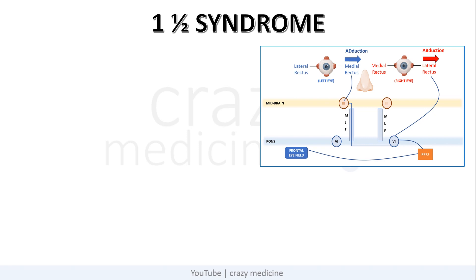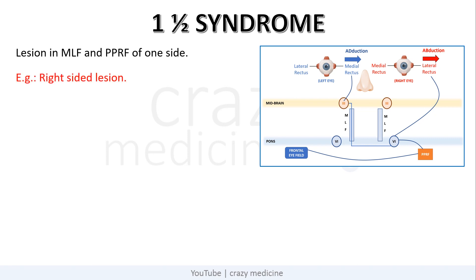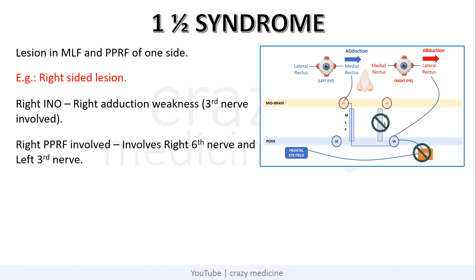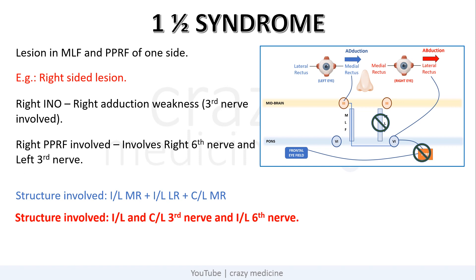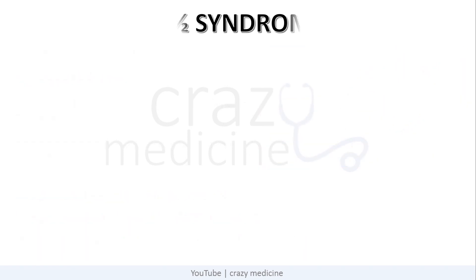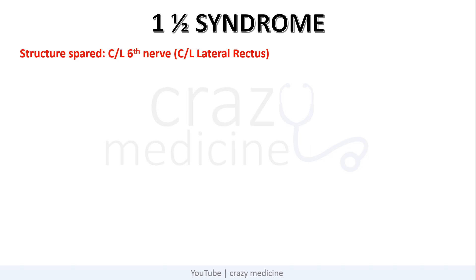Now coming to something called 1.5 syndrome. In 1.5 syndrome, the lesion is in the MLF and PPRF of one side. Taking the example of a right-sided lesion — right-sided MLF and PPRF are non-functional. As the right MLF is involved, there will be right INO, i.e. right adduction weakness due to 3rd nerve palsy. Right PPRF involvement also affects stimulation of right lateral rectus via the 6th nerve and left medial rectus via left MLF and left 3rd nerve nucleus. So the structures involved will be ipsilateral medial rectus, ipsilateral lateral rectus, and contralateral medial rectus — i.e. ipsilateral and contralateral 3rd nerve, and ipsilateral 6th nerve. The only structure spared will be the contralateral 6th nerve, i.e. contralateral lateral rectus.